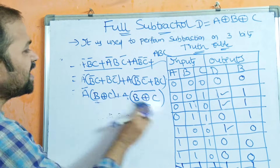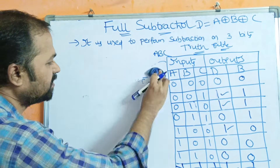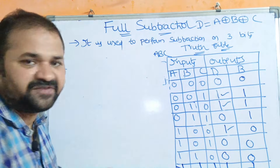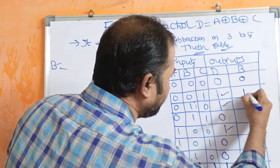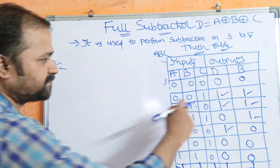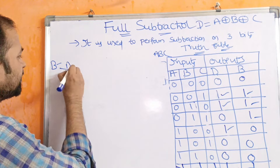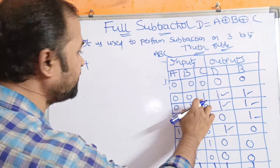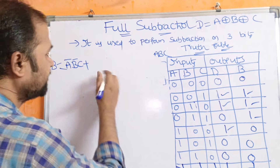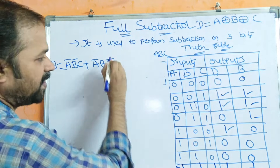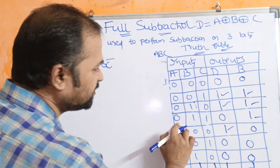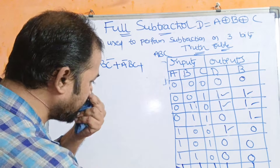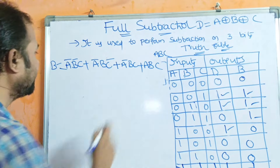Now we have to evaluate the expression for the borrow. Borrow B equals — here in the borrow column we have 4 ones. The first combination is A-bar·B-bar·C (0,0,1). The second is A-bar·B·C-bar. The third is A-bar·B·C. The last combination is A·B·C.